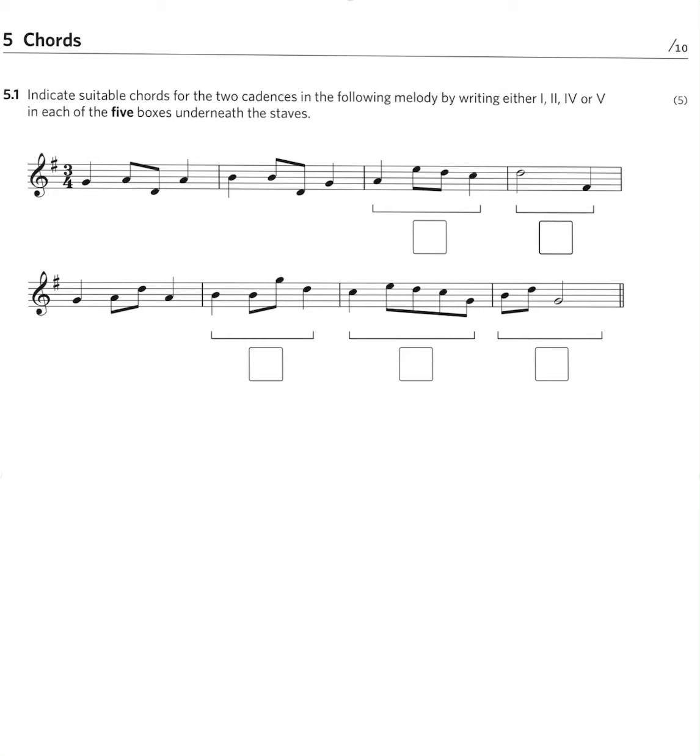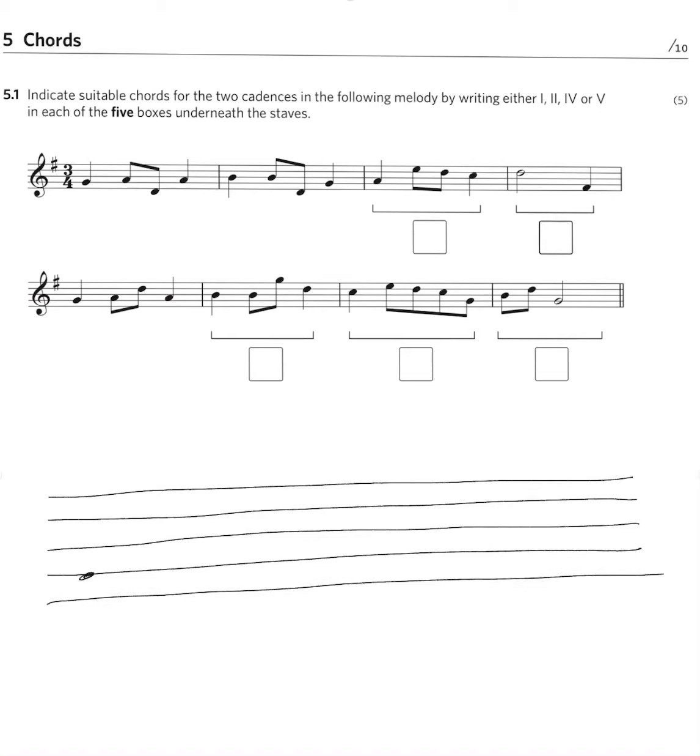The first thing to do is on a blank piece of paper draw a stave, put the key signature in, this melody is in G major and then write out a G major scale. The 4 possible chords are chords 1, 2, 4 and 5, so write those chords in. Chord 1 is a G major chord, chord 2 is an A minor chord, chord 4 is a C major chord and chord 5 is a D major chord.